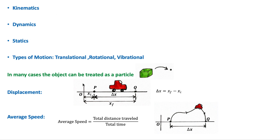In physics there are three types of motion: translational, like a block sliding on a surface; rotational, like the motion of the moon around the earth or a merry-go-round; and vibrational, like the motion of a mass-spring system when stretched and released. In many cases in mechanics, the object can be treated as a particle — a point mass of no size — if all of its parts move in exactly the same way and any internal motion can be neglected.